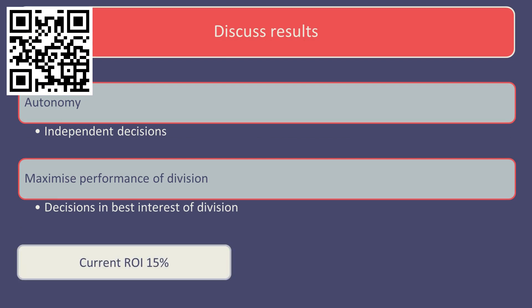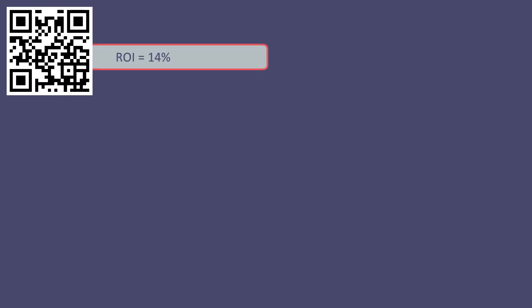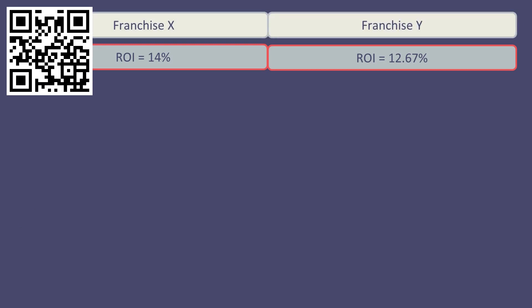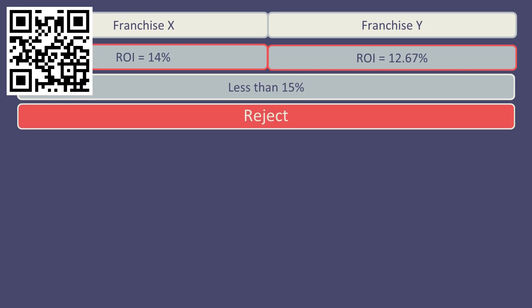In this case, return on investment is being used to assess the potential investment. As return on investment of both franchises currently stands at 15%, the manager would only be willing to accept an investment opportunity which will add to, or at the very least maintain, this return on investment. Thus, as the expected return on investment of 14% and 12.67% for franchise X and Y respectively are both below the current return on investment of 15%, both franchise managers would reject the investment opportunity.